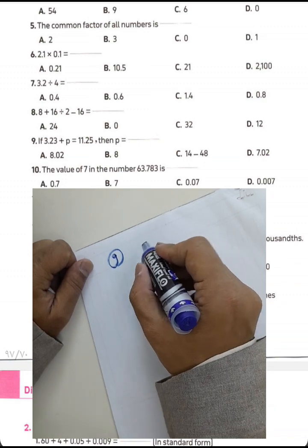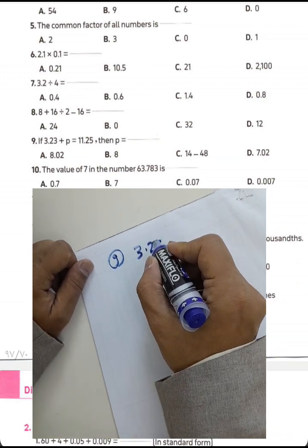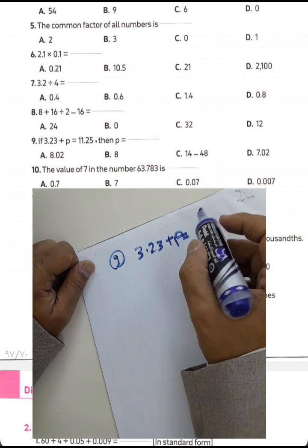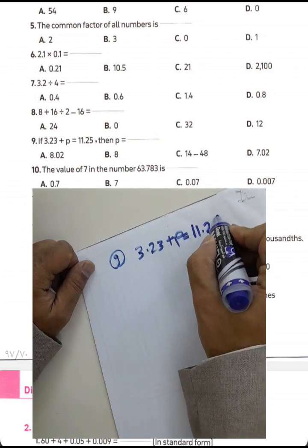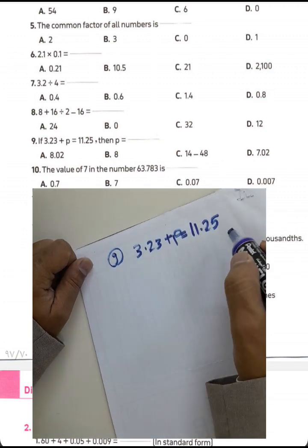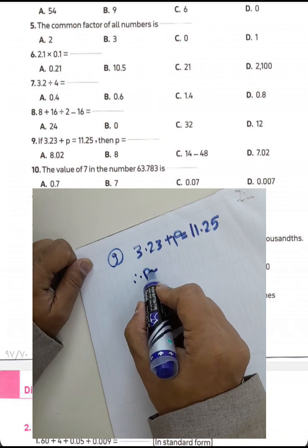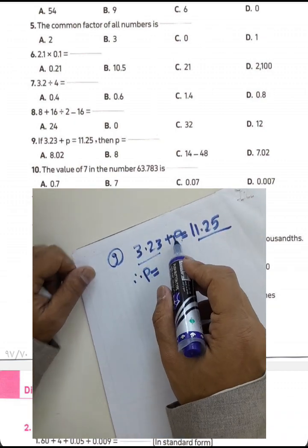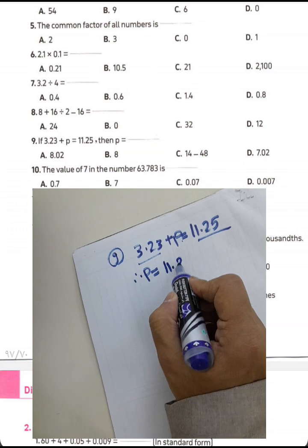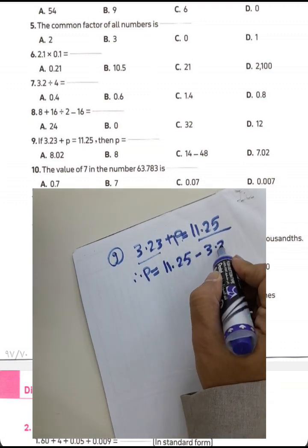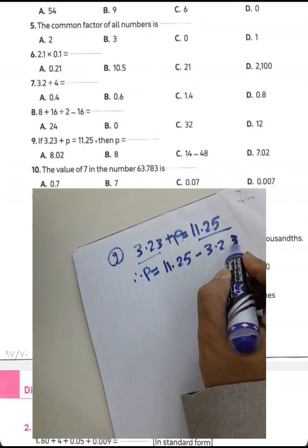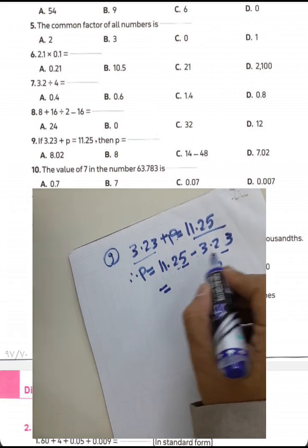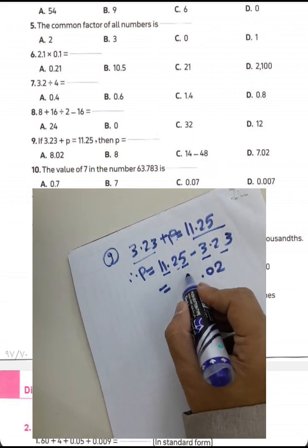Question 9: 3.23 plus p equals 11.25. Find p by finding the difference: 11.25 minus 3.23. Calculate: 5 minus 3 equals 2, 2 minus 2 equals 0, and 11 minus 3 equals 8. So p equals 8.02.